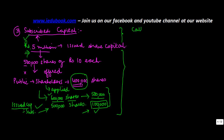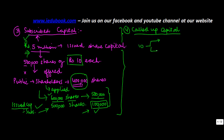Now the next one is the called up capital. In this example we saw that the shares were rupees 10 each. What can happen is that many times the company calls for this amount of rupees 10 in installments. What's the reason for calling in installments? Let's say for example you have 5 million worth of shares.